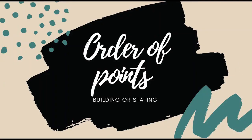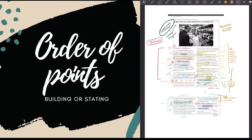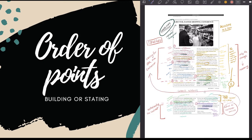Another thing to consider is the order of points or arguments in the article. The order can go from strongest to weakest, gaining the audience's approval straight away before consolidating the view. The more common approach, however, is where the author builds up their argument toward a solution or a final assertive point at the end of the article, allowing the audience to firmly agree with them by the end of the piece.